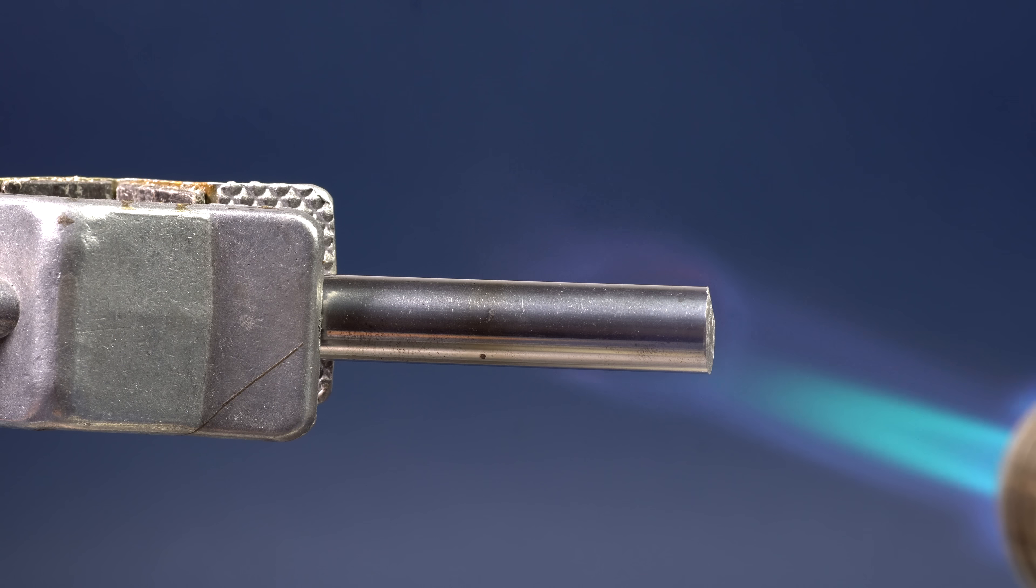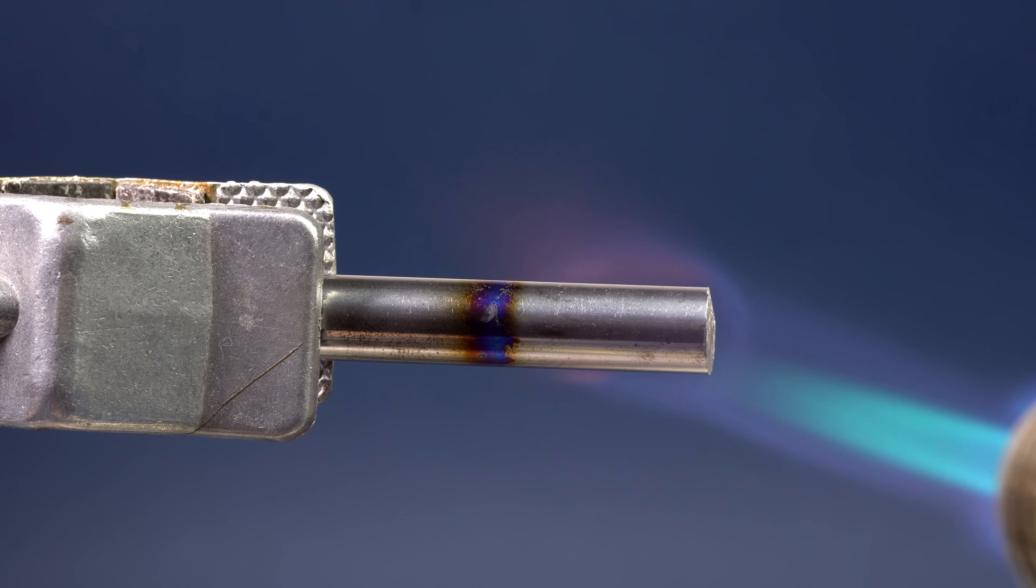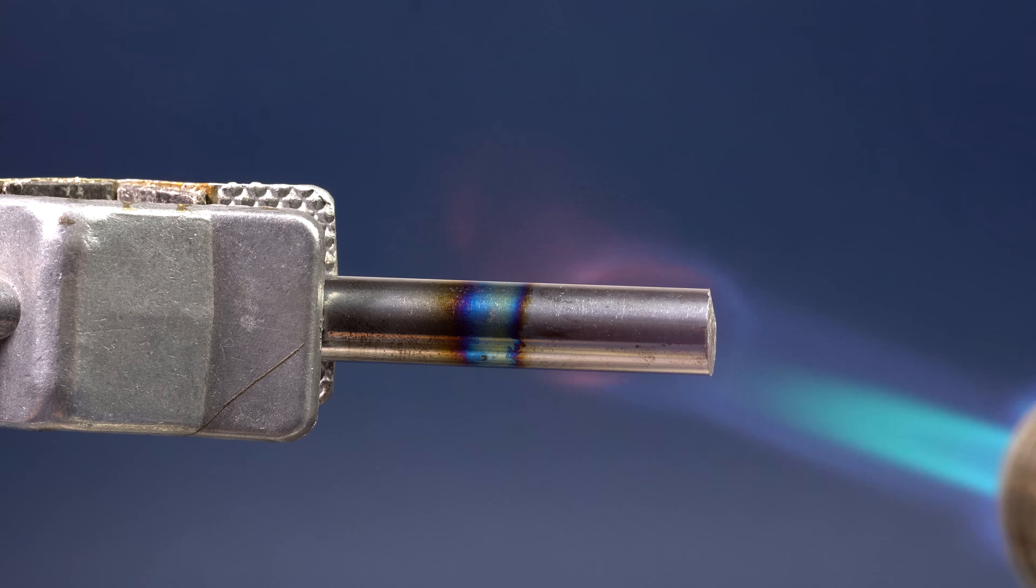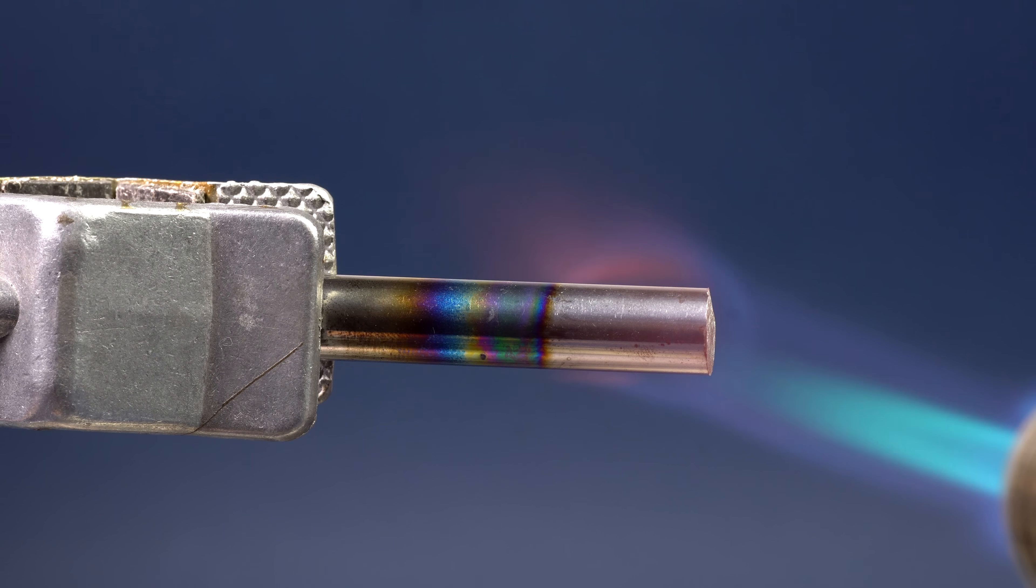Also, the tungsten rod, after calcination with a gas burner, obtains beautiful colorful stains, caused by the different thickness of the oxide film on the metal surface.